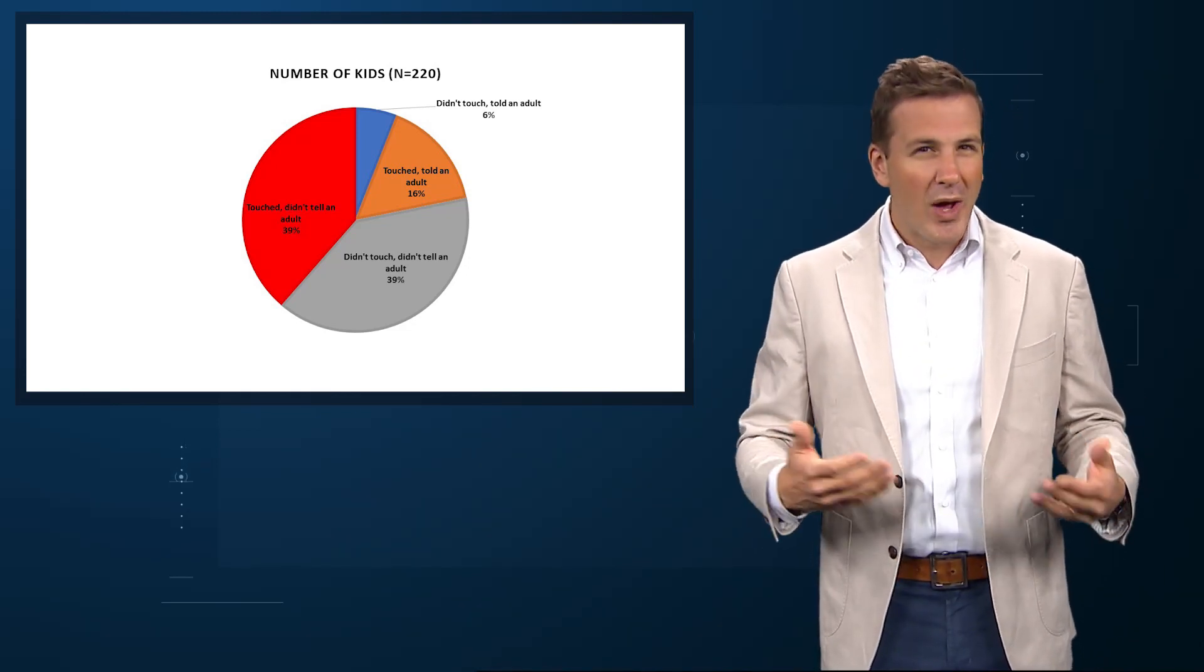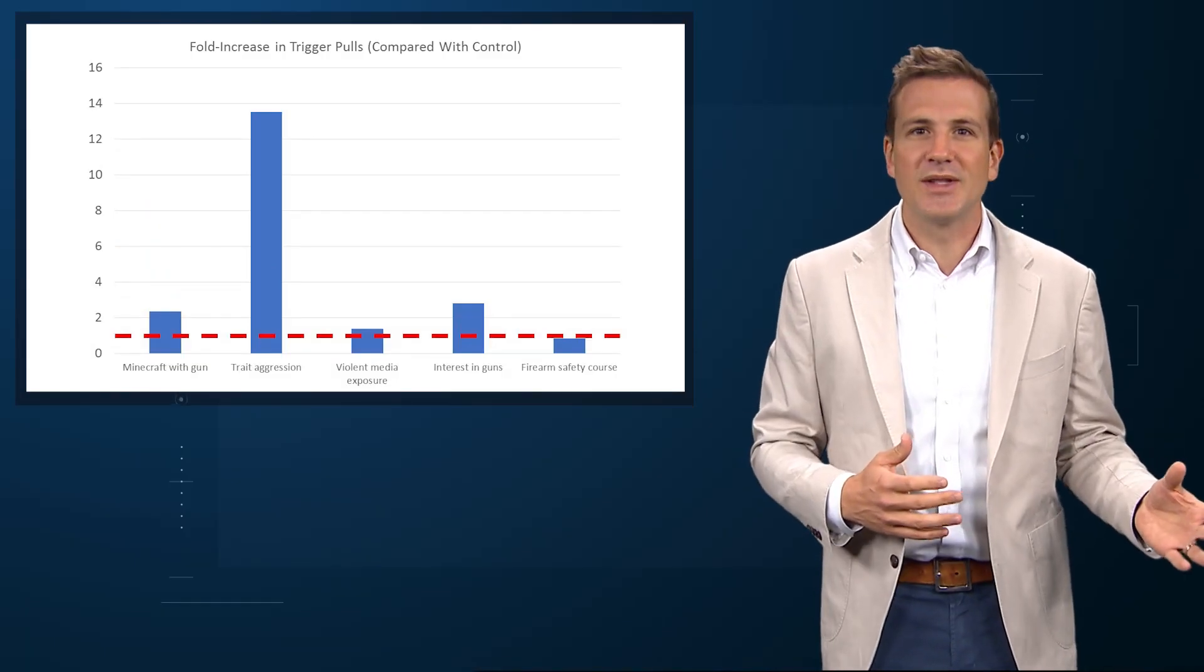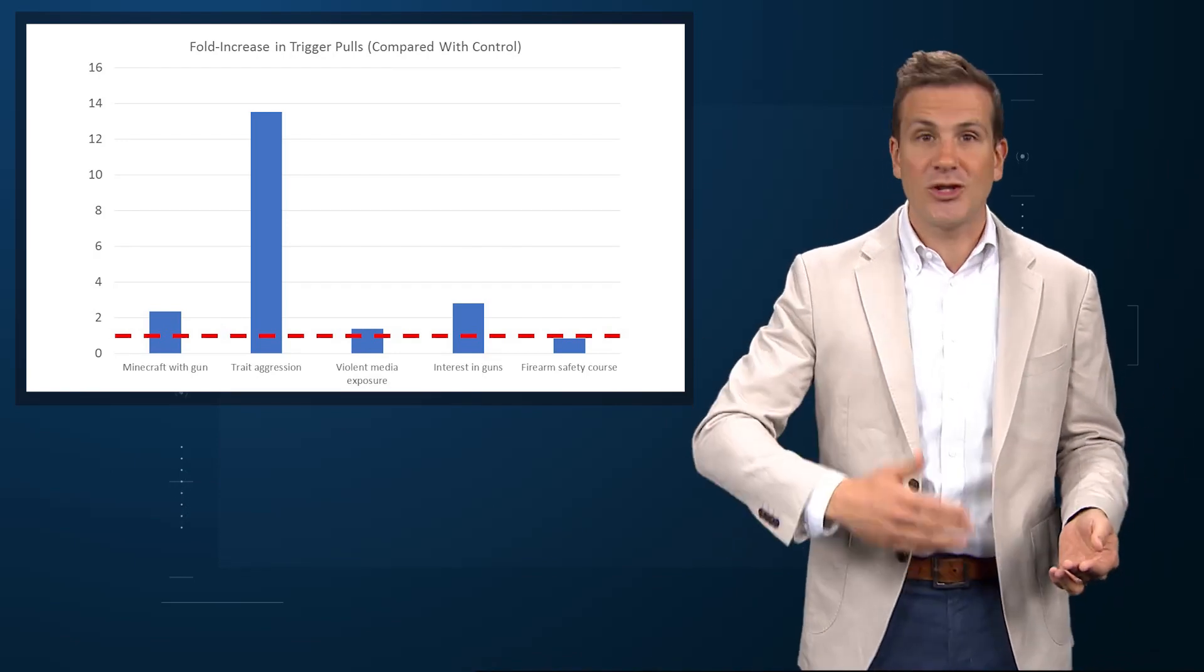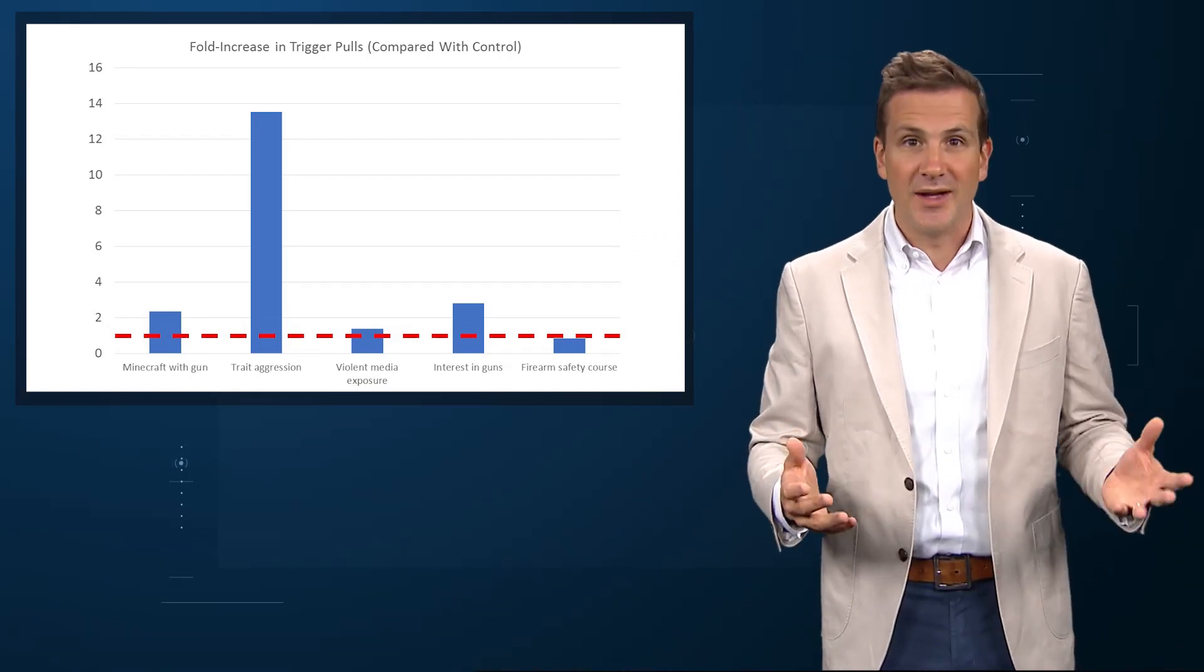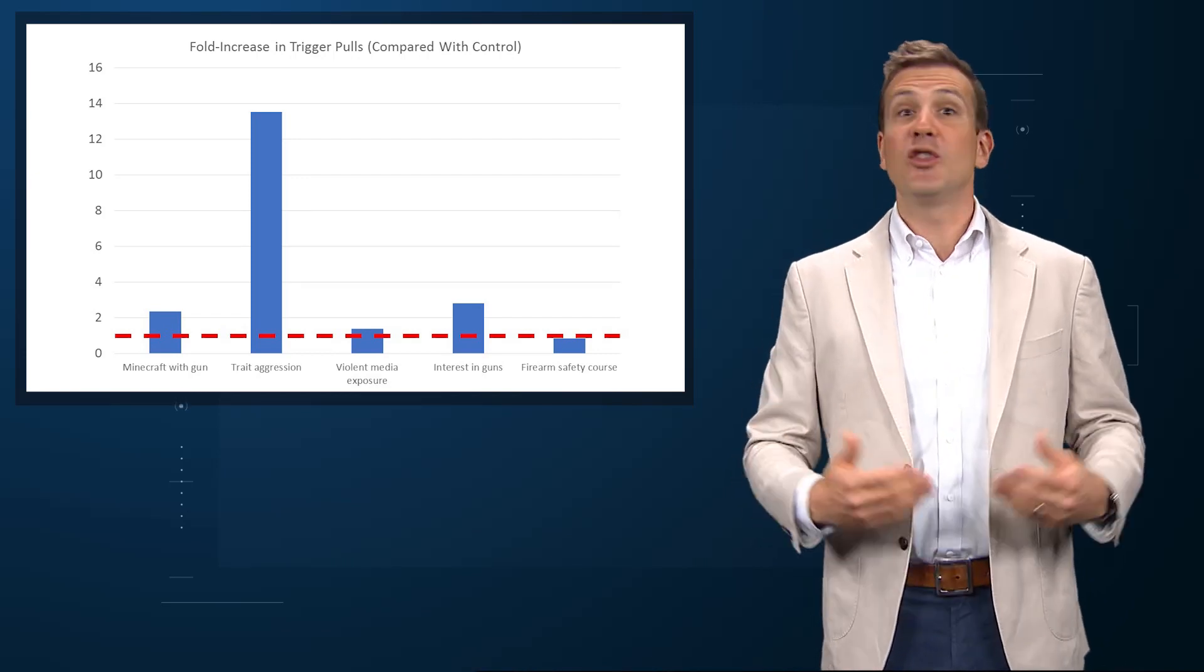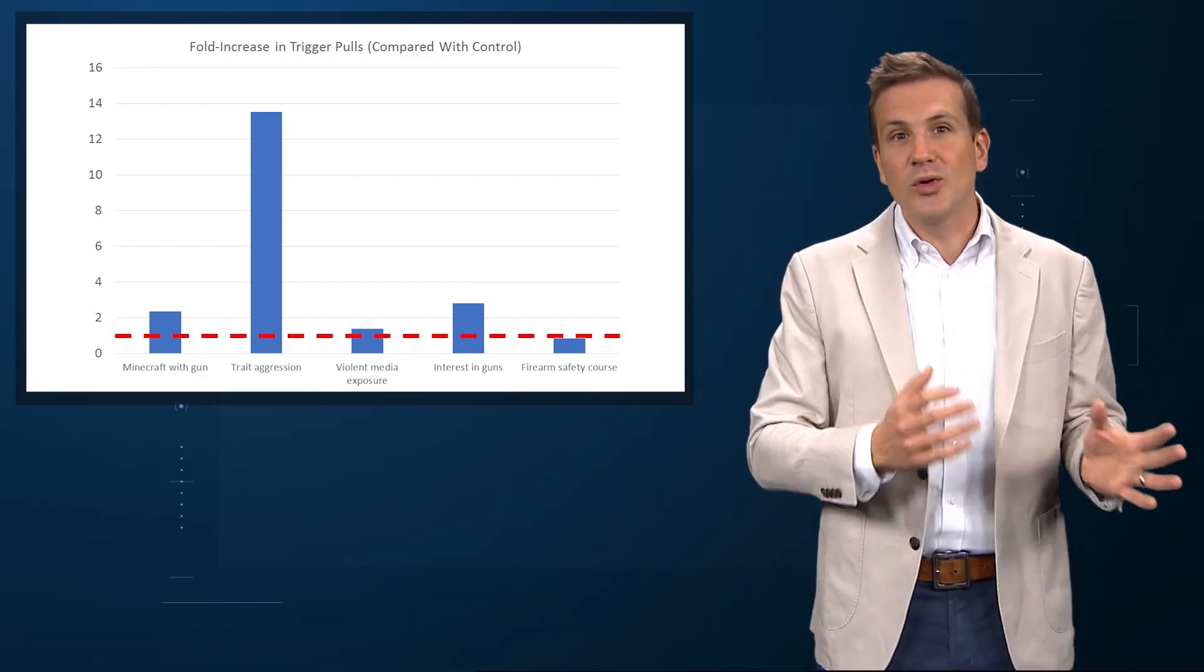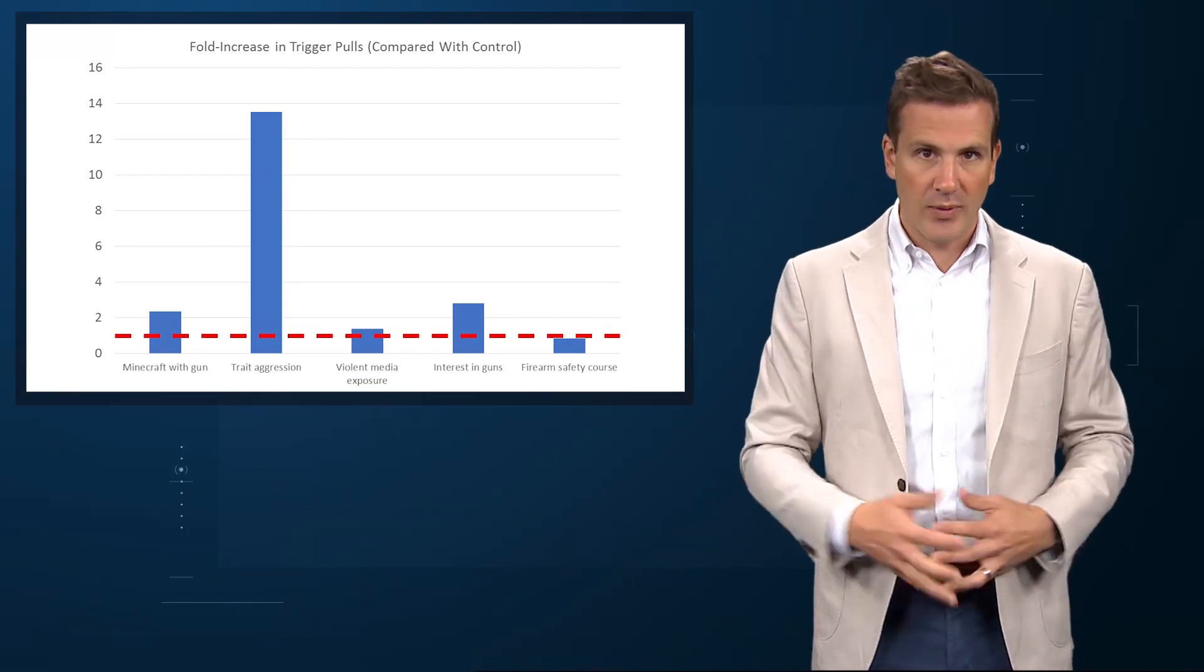But how influential was the violent version of the video game really? Digging into their regression results, you can see that while the violent video game condition had some effect, it was washed out by trait aggression, the natural aggressive tendency of the child. Children shown Minecraft with guns pulled the trigger about twice as often, but kids who were more aggressive at baseline pulled the trigger 13 times as often. This suggests that the arrow of causality goes from natural aggression to consumption of violent media as opposed to the other way around.